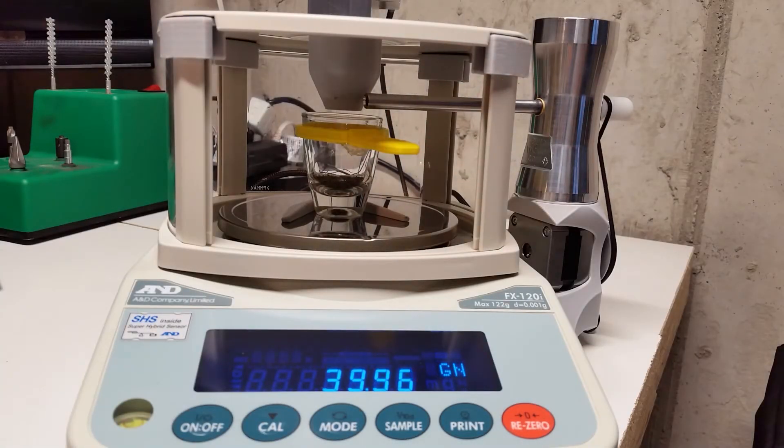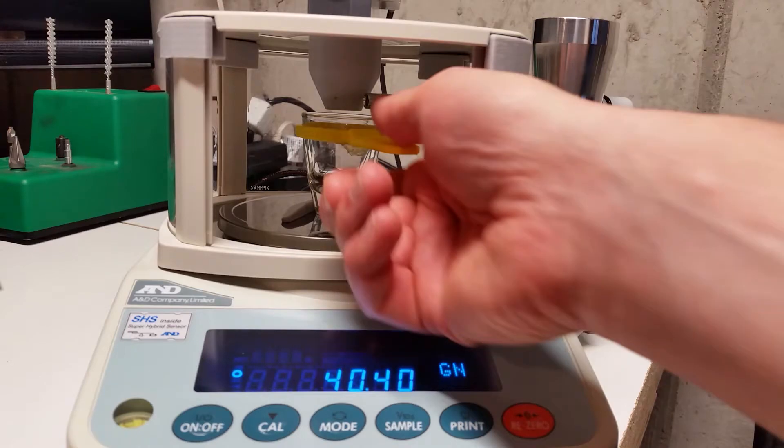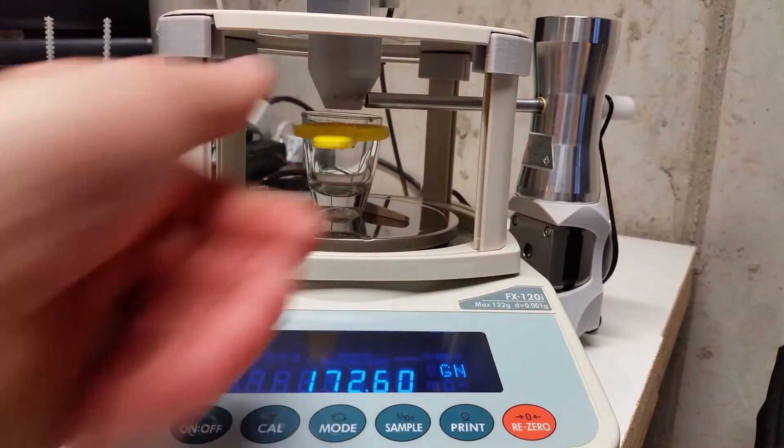The auto trickler is really fast, getting a charge ready in about 10 seconds or less, but sometimes I can place a bullet, seat it, and get it in my storage case before the next charge is done.